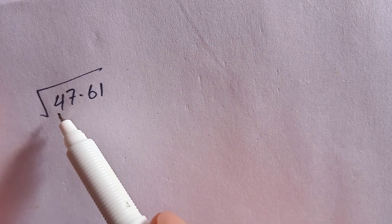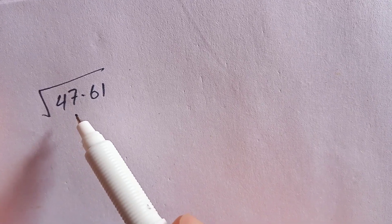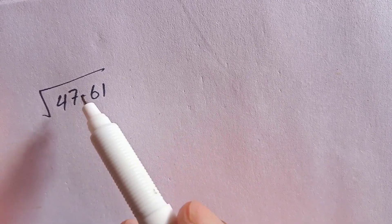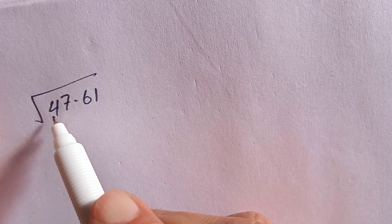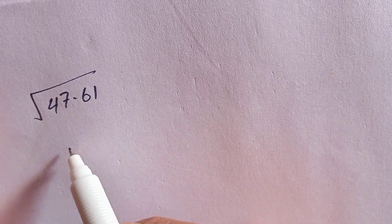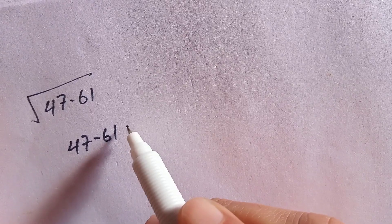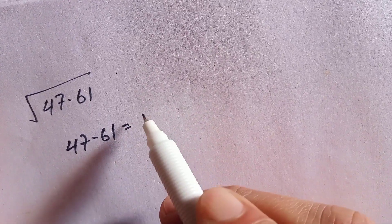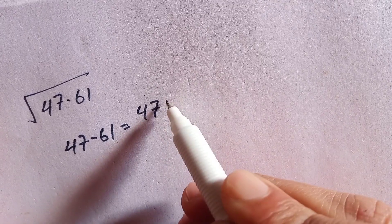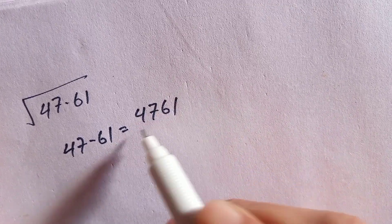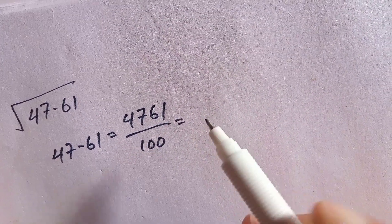It is very easy to find the square root of a number with decimals. We write 47.61 as 4761 over 100.